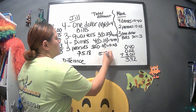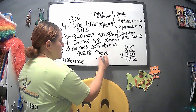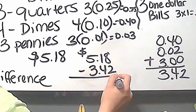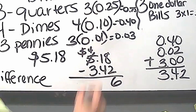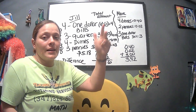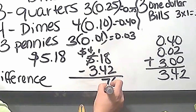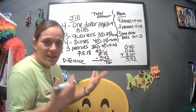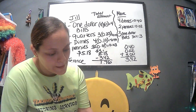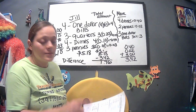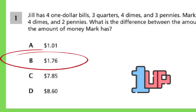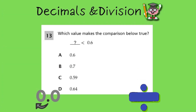Now we find the difference: 5.18 minus 3.42. Make sure it's aligned correctly. Eight minus two is six. We regroup for the tens: eleven minus four — counting back: eleven, ten, nine, eight, seven — that's seven. And four minus three is one. So our answer is 1.76. Checking the answer choices, yes, the answer is B: 1.76.